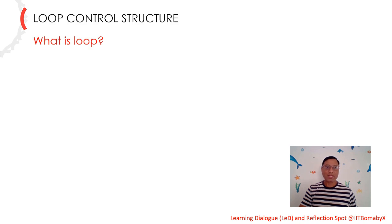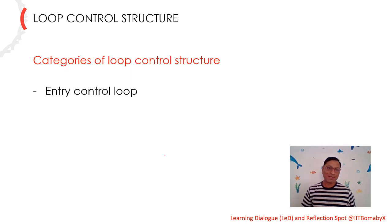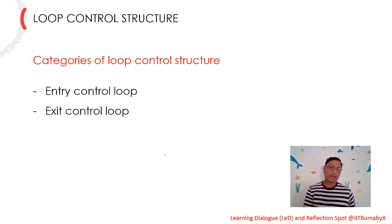Let me begin with what is a loop. A loop is a programming structure that repeats a sequence of instructions until a specific condition is met. Basically there are two different types of loop control structure: entry control loop and exit control loop.